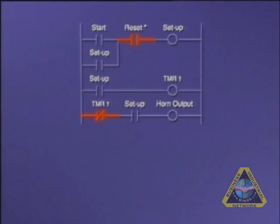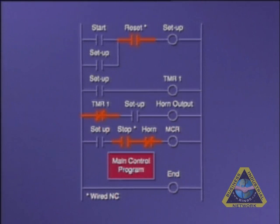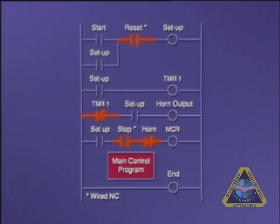Let's see another example of an NCR output. You can recall our startup horn enunciator circuit. We can easily add the fenced part of the program for the control of that line. We simply program a ladder circuit with an NCR right after the horn output and place the control program under the NCR fence control.